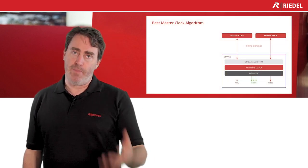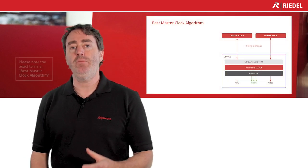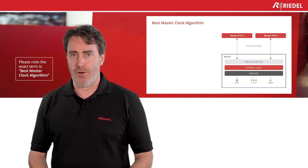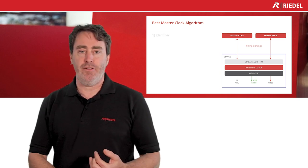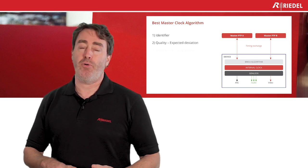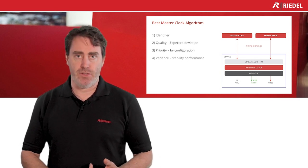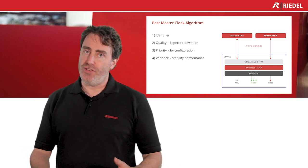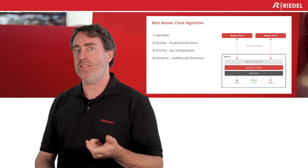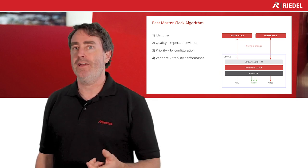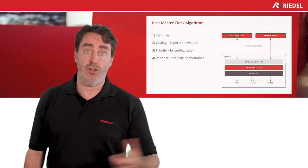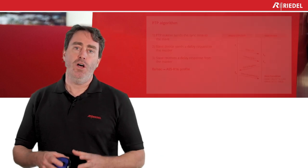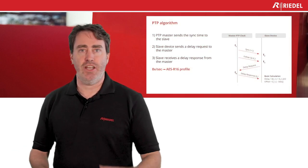So how this works — there are two masters, master A and master B. They will go through what we call the best master clock algorithm for grandmaster selection. We start with the identifier, the quality of the master, the priority, and the variance of the clock, and then we can establish which one is the best. If they're both the same, there's also an identification inside the grandmaster and we'll pick the one that is prioritized. So when the grandmaster is selected, it will start exchanging with the devices.